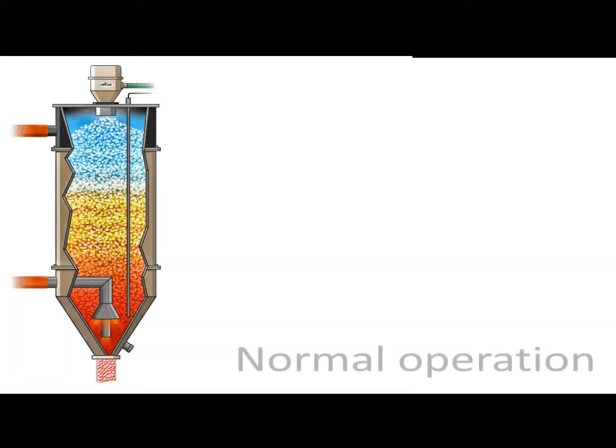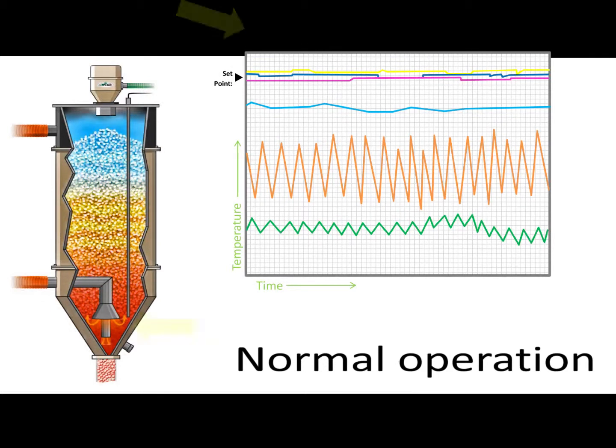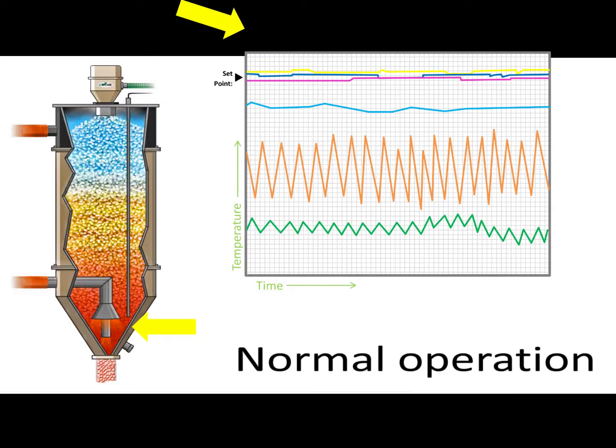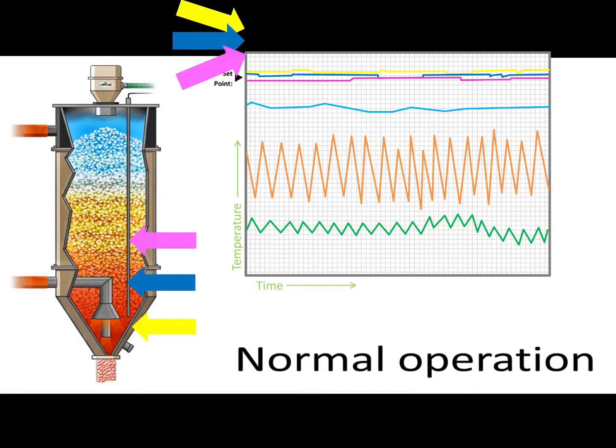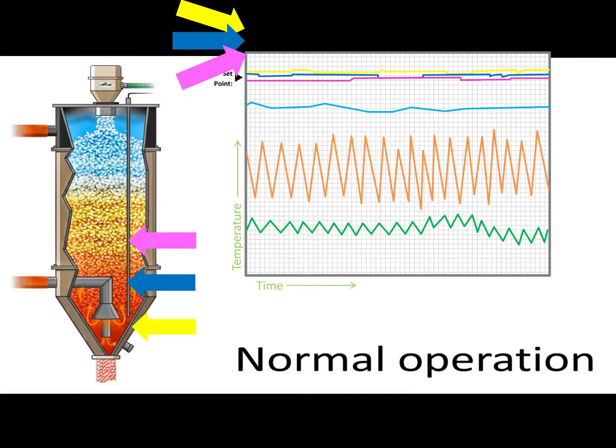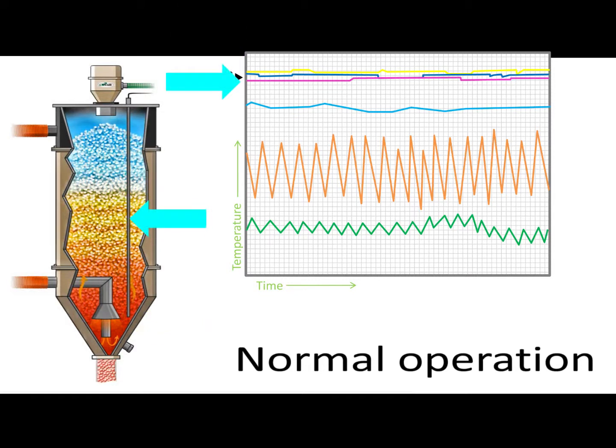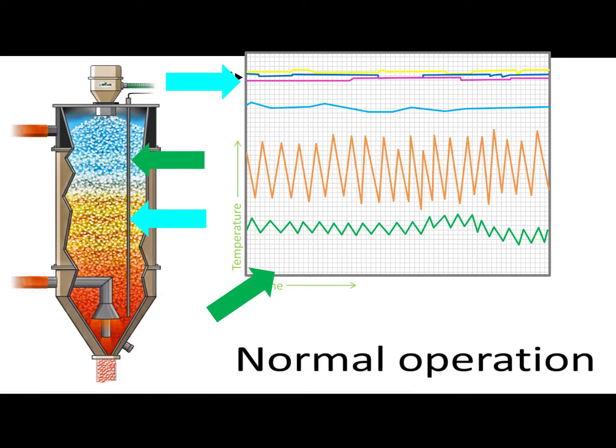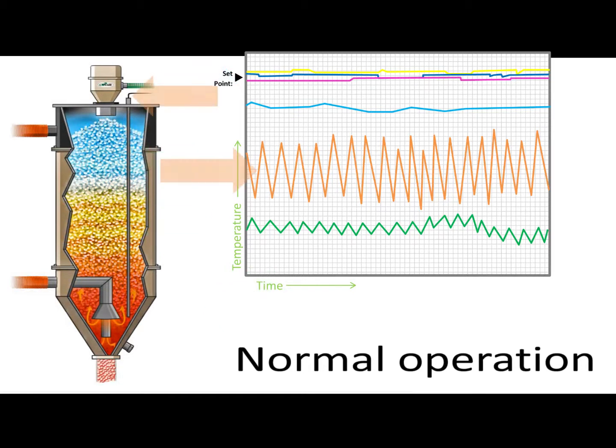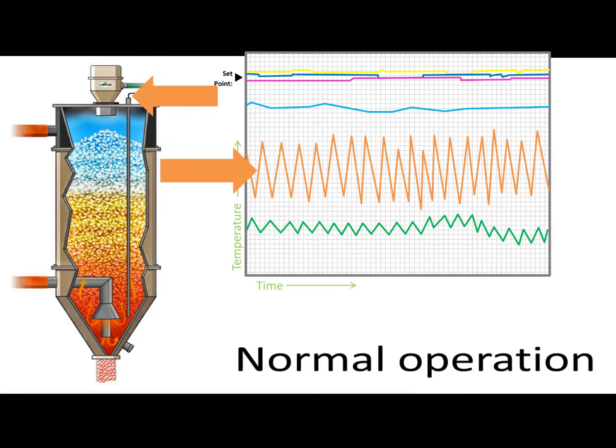In normal operation with material flowing through the hopper, sensor T1 will read closest to the process air temperature and T2 and T3 will typically be very close to the process air temperature as well. T4 and T5 will display temperatures descending in value from the process temperature. T6 will also follow this pattern unless it is located above the material, which is very common.